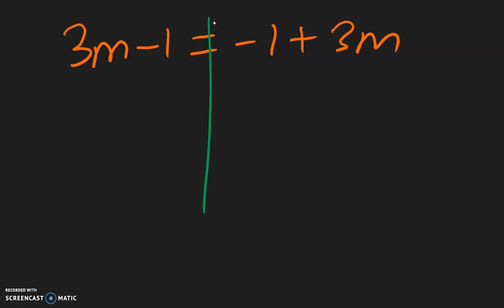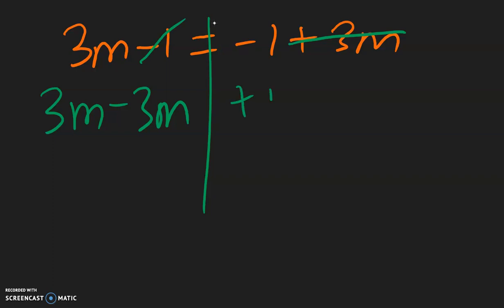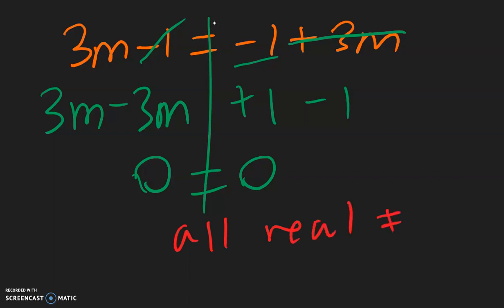For this example, 3m needs to stay over here. And this positive 3m comes over here, becomes negative 3m. Getting the constants on the right side, this negative 1 needs to move, becomes positive 1. And this negative 1 over here can just stay. So we get 3m minus 3m, which is 0. 1 minus 1, which is also 0. So 0 equals 0, which is a true statement — and it is always true, it doesn't matter what m is equal to. m is gone because 3m minus 3m is 0. So you can say all real numbers, or you can say infinitely many solutions. Both of them mean the same thing.